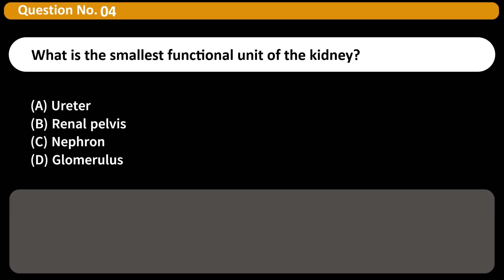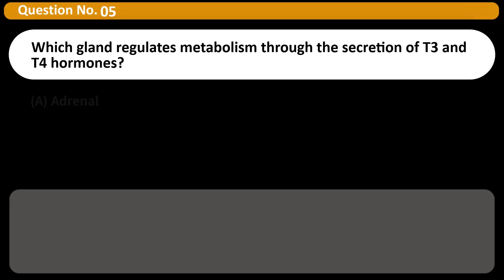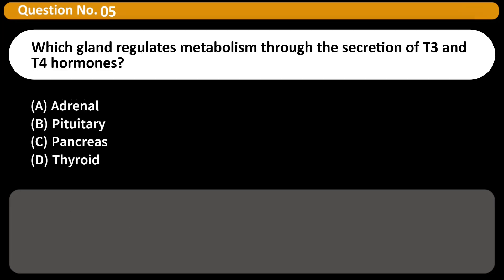What is the smallest functional unit of the kidney? A) Ureter, B) Renal pelvis, C) Nephron, D) Glomerulus. Answer: C. The nephron is the microscopic structure that filters blood and forms urine in the kidney.